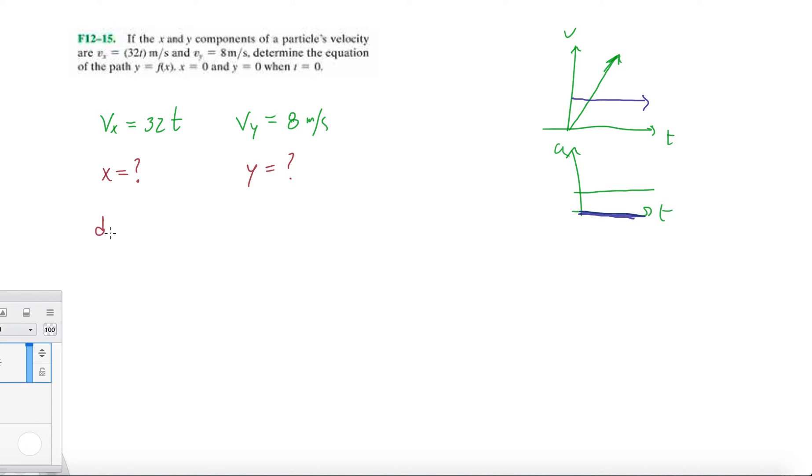So in order to do x, we know that vx is dx/dt. So we want to just integrate once. Let's do that real quick. And this is dt, and it's at the origin at time equals 0.